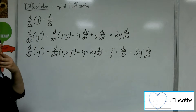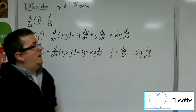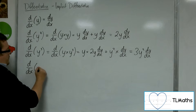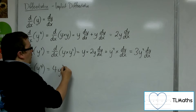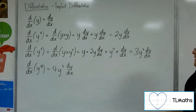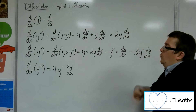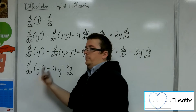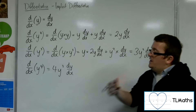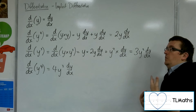So: y differentiates to dy/dx; y² differentiates to 2y·dy/dx; y³ differentiates to 3y²·dy/dx. You might think that the derivative of y⁴ would be 4y³·dy/dx — and it is. Working with y to the power of a positive whole number, it differentiates much as you would expect x to differentiate, but we stick dy/dx on the end.